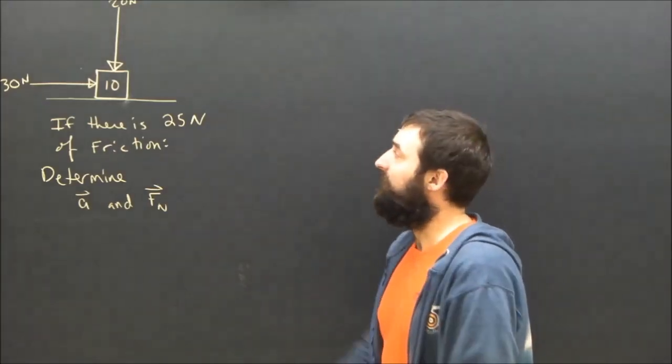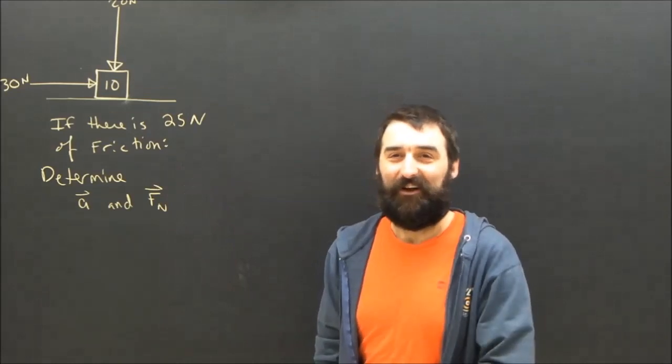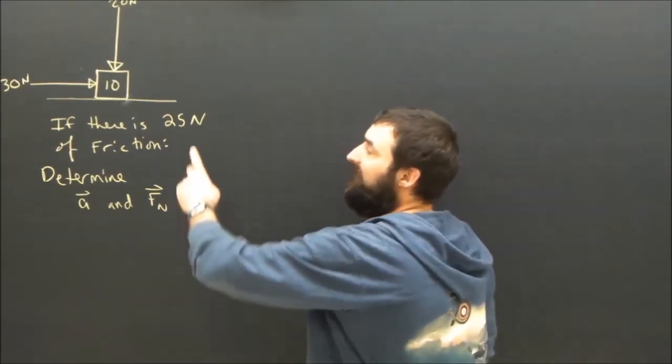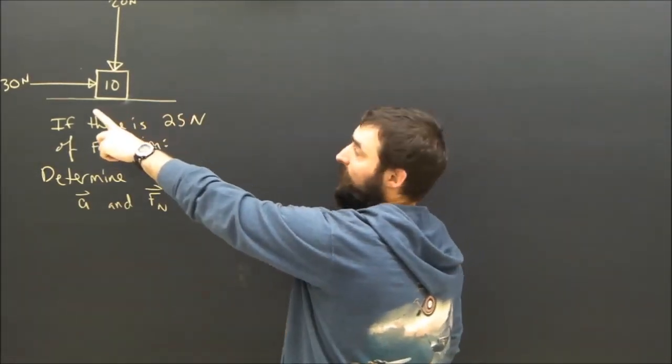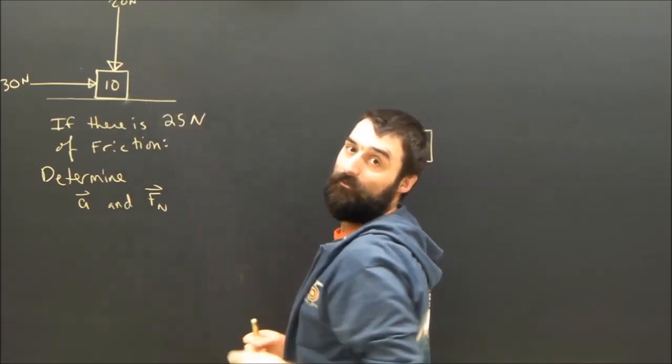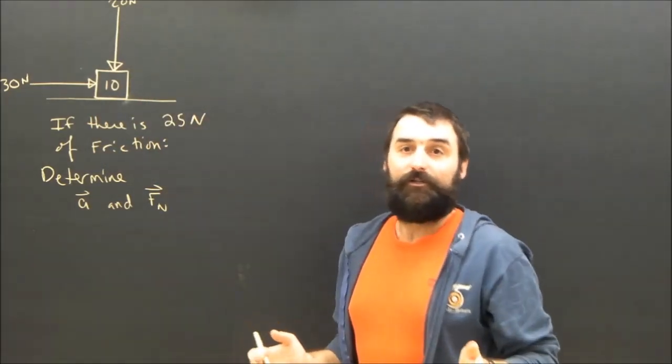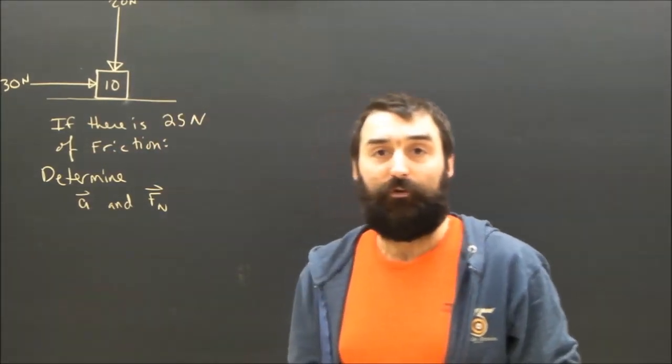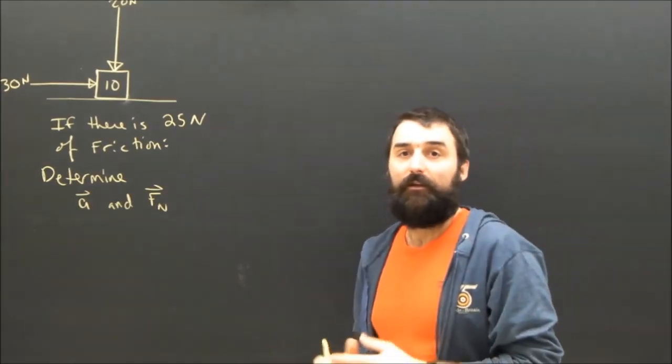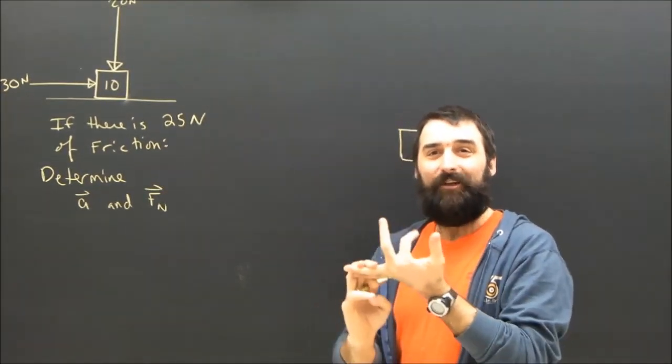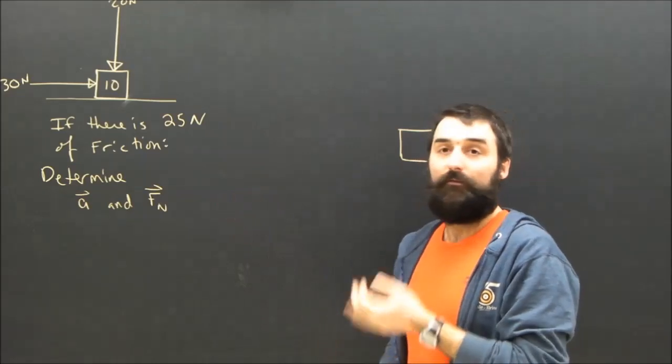Okay, so in this question we have a 10 kilogram object of some sort. It's being pushed to the right by someone with a force of 30 newtons and it's being pushed down with a force of 20 newtons. And the question is, if there is 25 newtons of friction, what's going to be the magnitude of Fn and what's going to be the acceleration of the box?